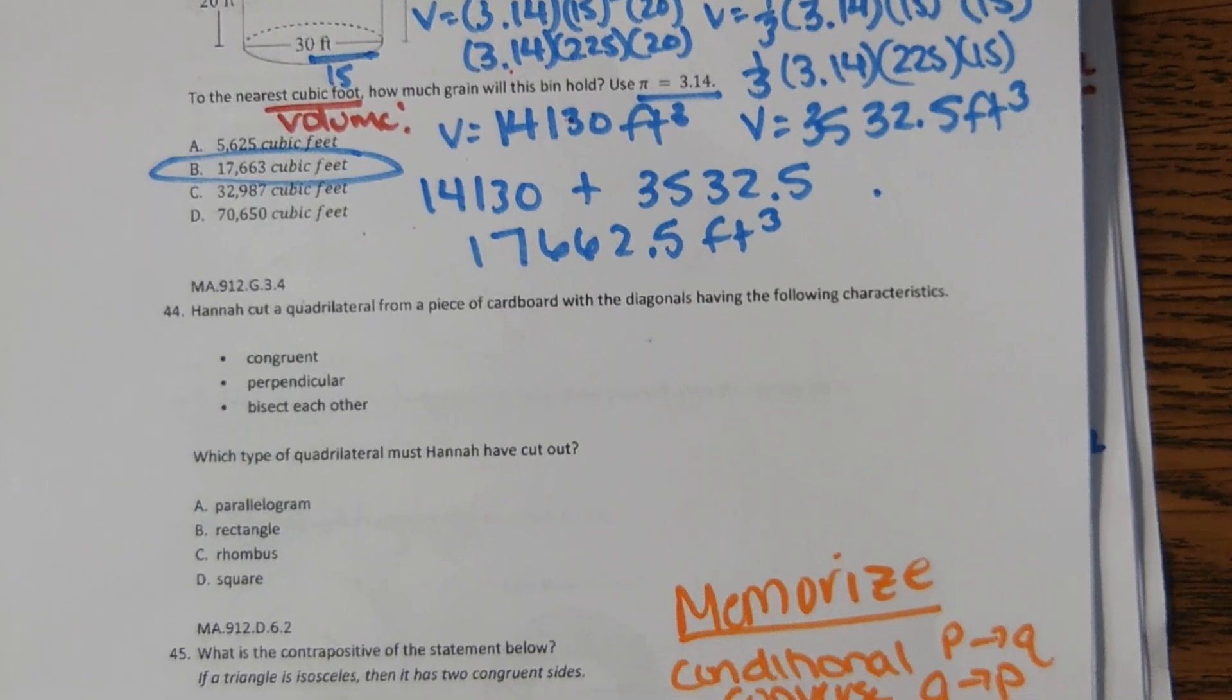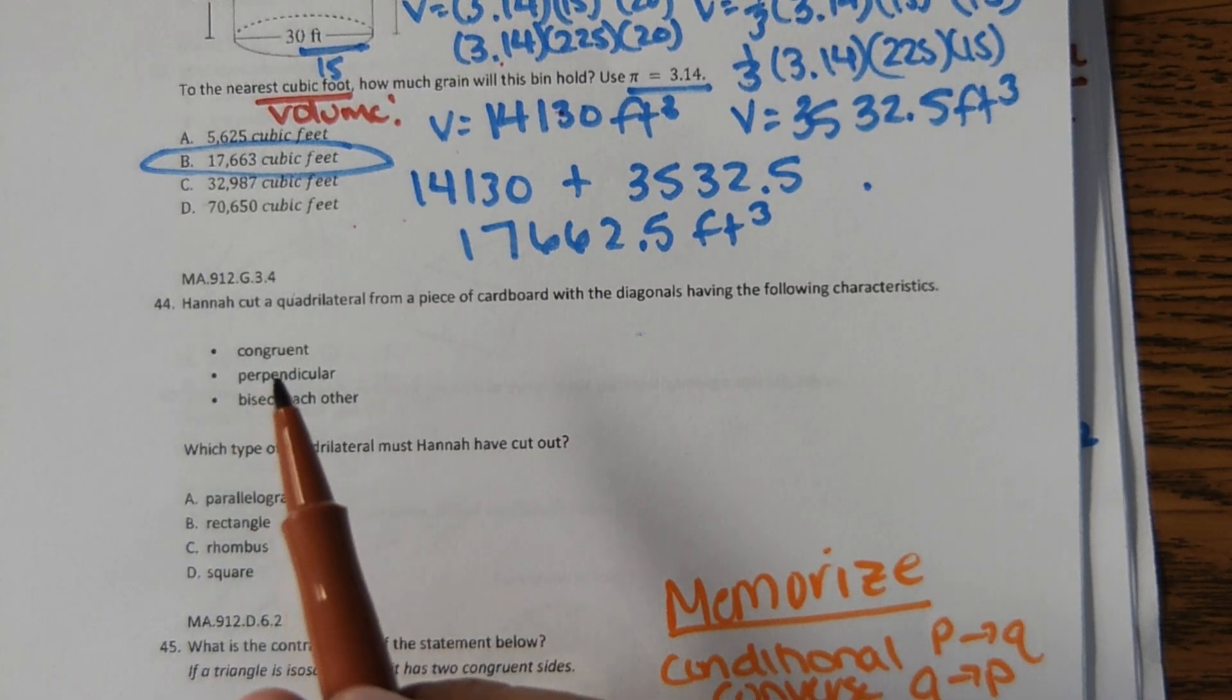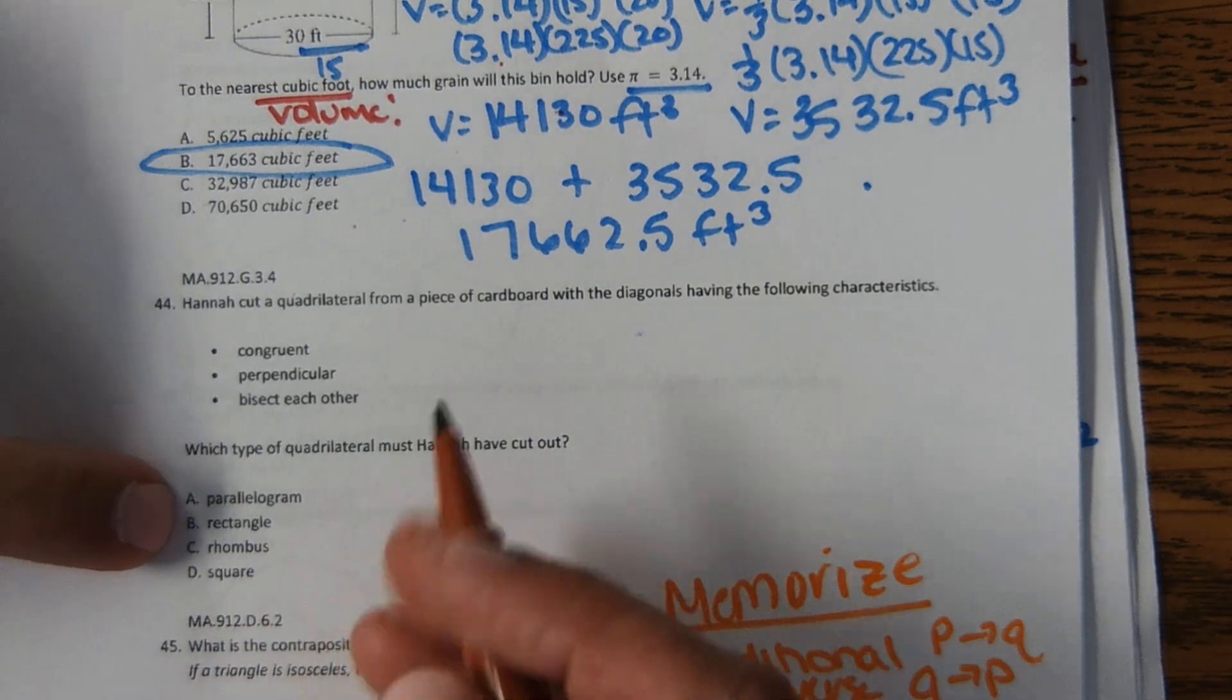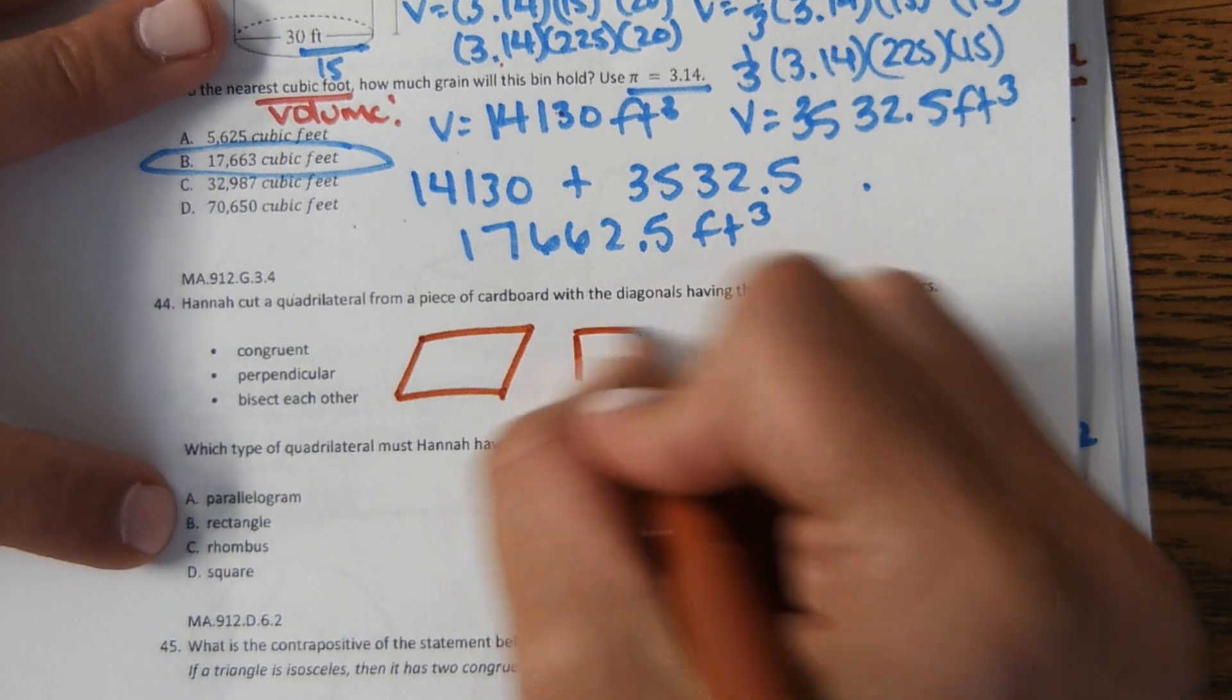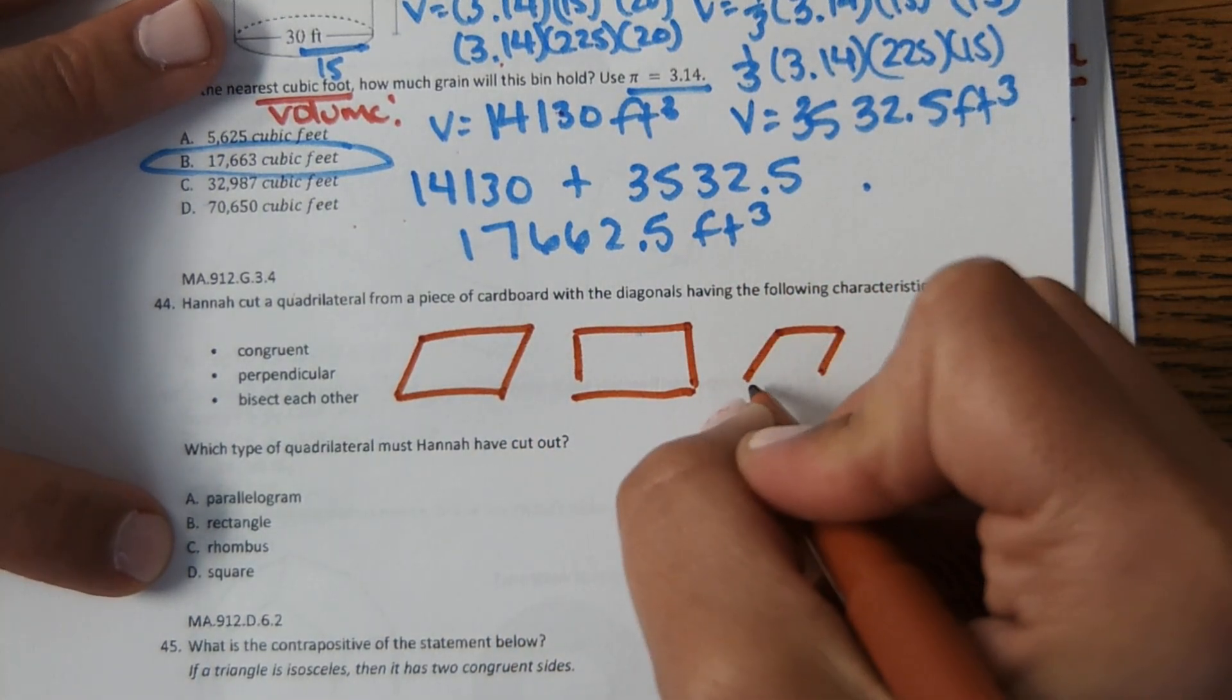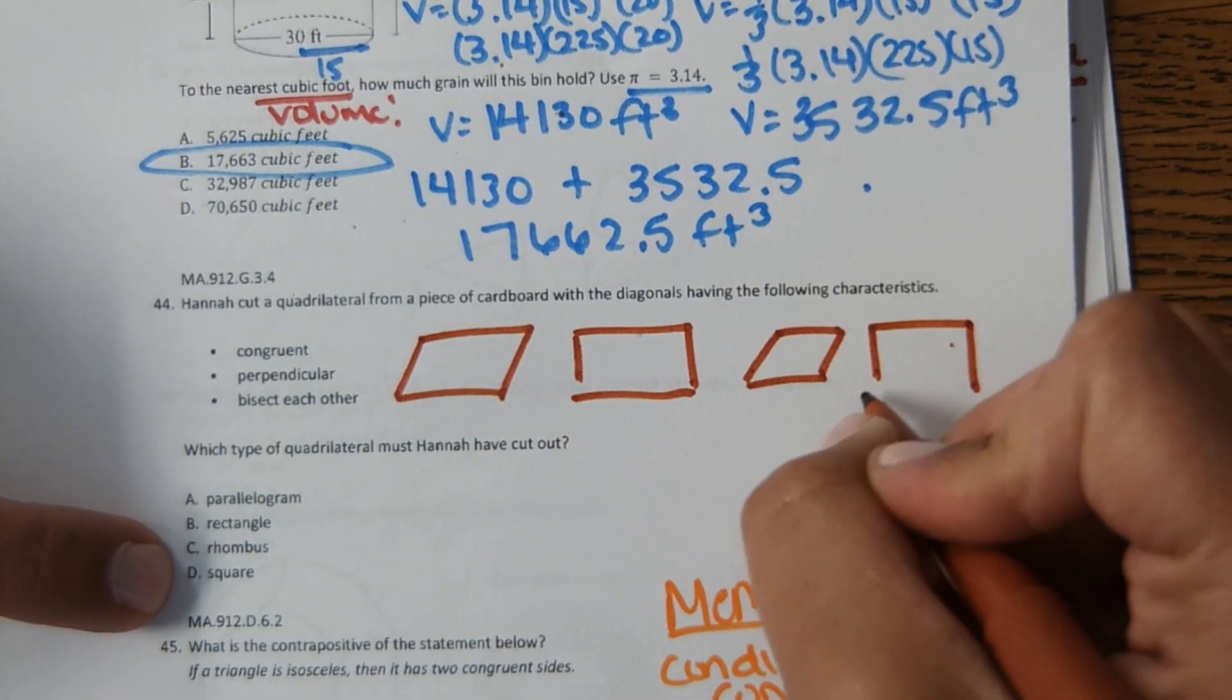Next, it says Hannah cut a quadrilateral from a piece of cardboard with the diagonals having the following characteristics: congruent, perpendicular, and bisect each other. Which type of quadrilateral must Hannah have cut out? So I'm going to look at the answer choices and just try to draw them. So you have parallelogram, rectangle, rhombus (all the sides equal, and it's also a parallelogram), and square would look like this.